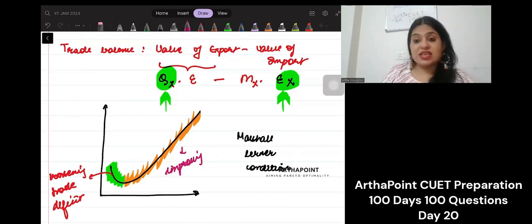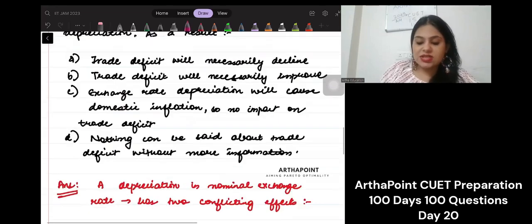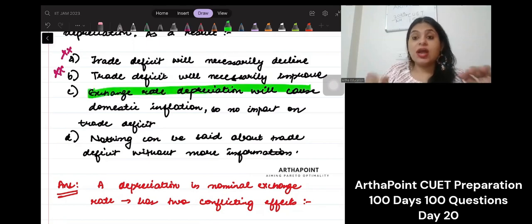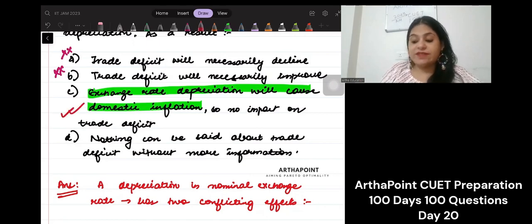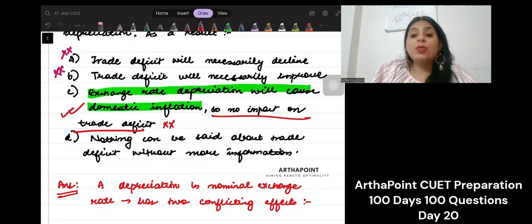Right, so we can't necessarily say what is true unless we don't have more information. Now look at the third one. So this necessarily is not true, this necessarily is not true. Now this says exchange rate depreciation will cause domestic inflation. Till this point it is correct, yes it causes inflation of the currency.